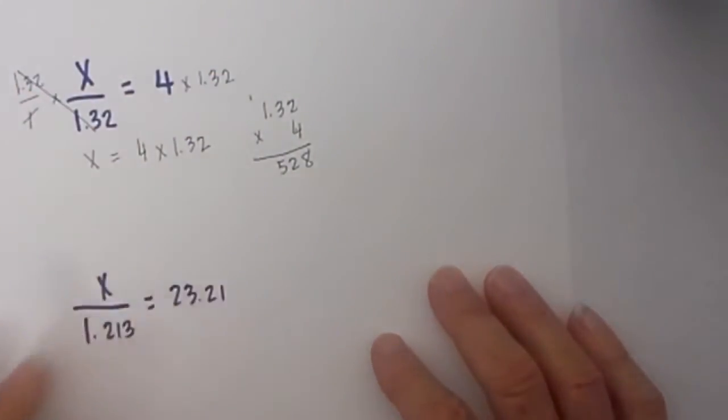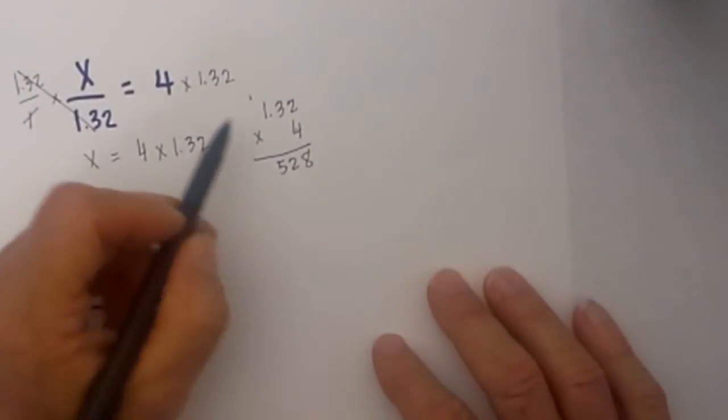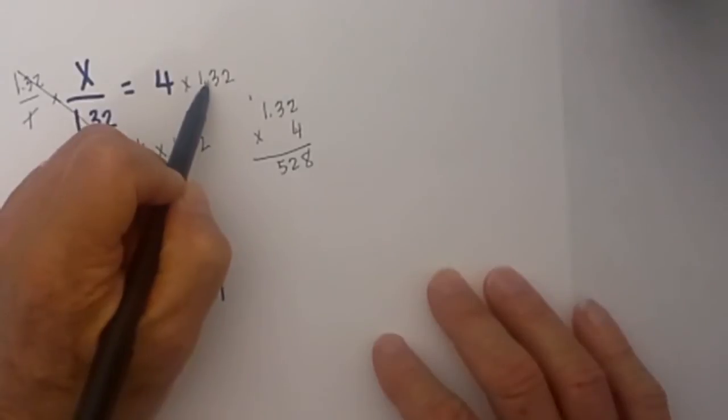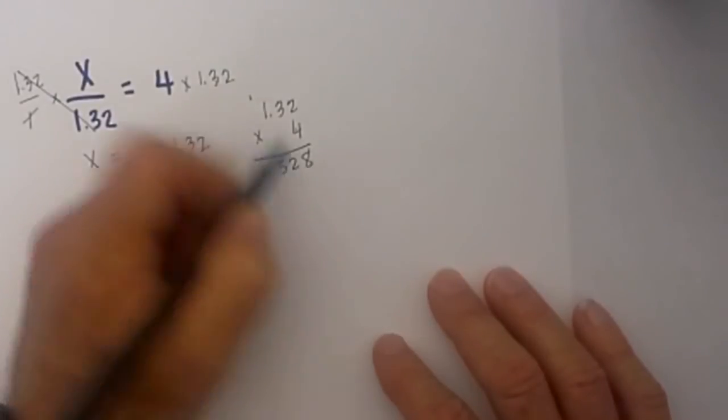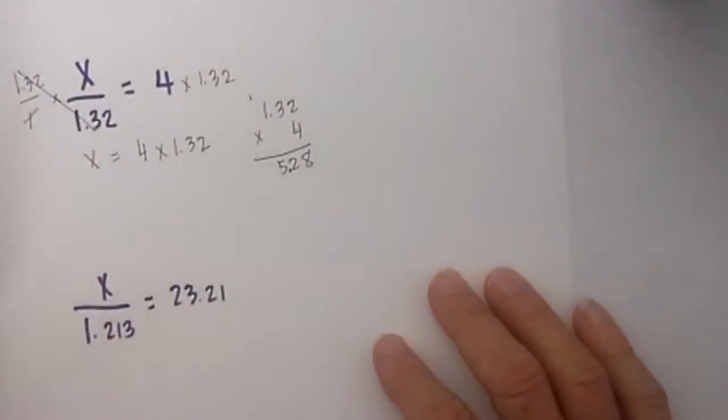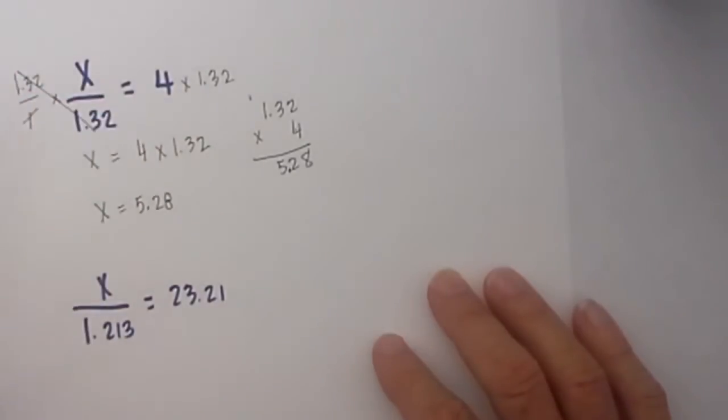Now we know that 528 can't be the answer. If you will notice, at 1.32 we have 2 numbers to the right of the decimal. So we need to place 2 numbers to the right of the decimal with the answer. So in this instance x is equal to 5.28.